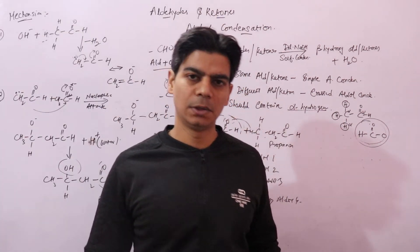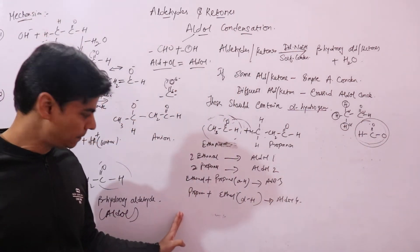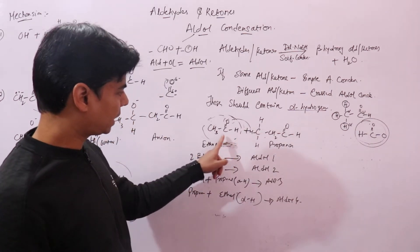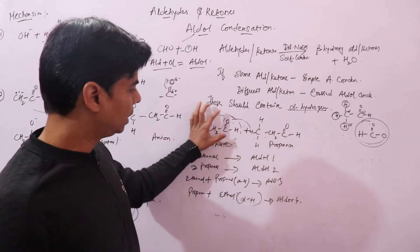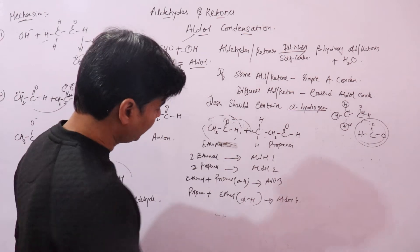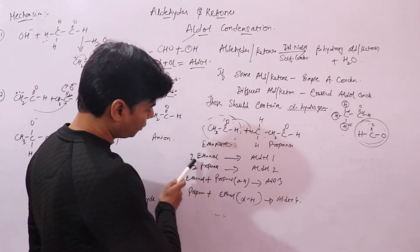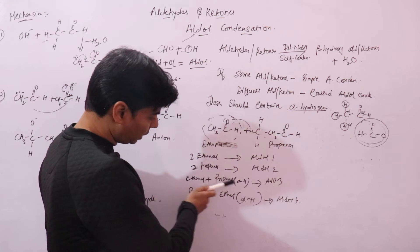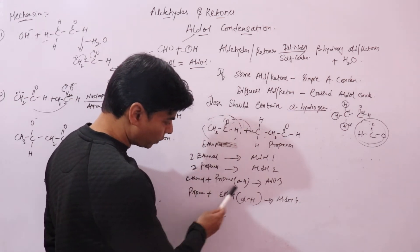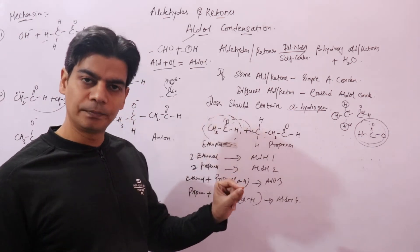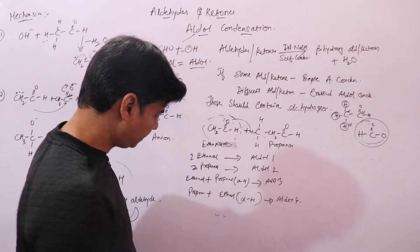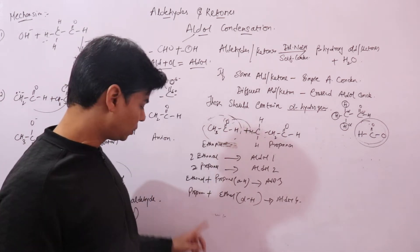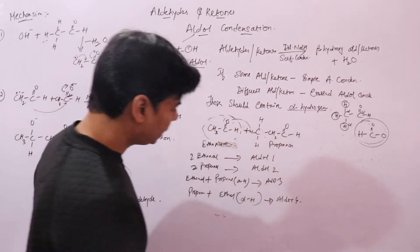This is a continuation of the previous video lecture where we were looking at crossed aldol condensation. We were discussing the reaction between ethanol and propanol, which is a crossed aldol condensation since it is a reaction between two different aldehydes. The first product comes from two molecules of ethanol, the second from two molecules of propanol, the third from ethanol and propanol where the alpha hydrogen from propanol attacks the carbonyl oxygen of ethanol, and the fourth product comes when the alpha hydrogen from ethanol attacks the carbonyl oxygen of propanol.